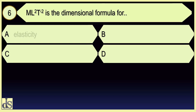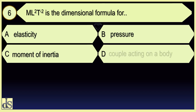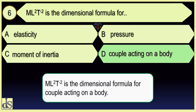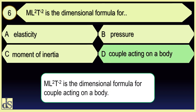ML²T⁻² is the dimensional formula for Couple acting on a body.